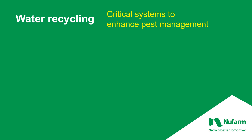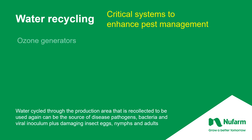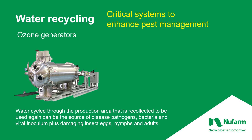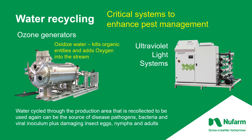Once you have the water and are working with it, you need to keep it in the recycled system. Critical systems to enhance pest management include ozone generators, where water is recycled through the production area and then ozonated with the generator, which oxidizes everything in the water, both organic and biologic. This purifies the water system — it kills the organic material and adds oxygen into the system, which is an added benefit for plant and root development. The other alternative for taking care of organic materials is ultraviolet light systems, which damage the cellular integrity of any pathogens in the water. Using either or both of these systems will purify your water.